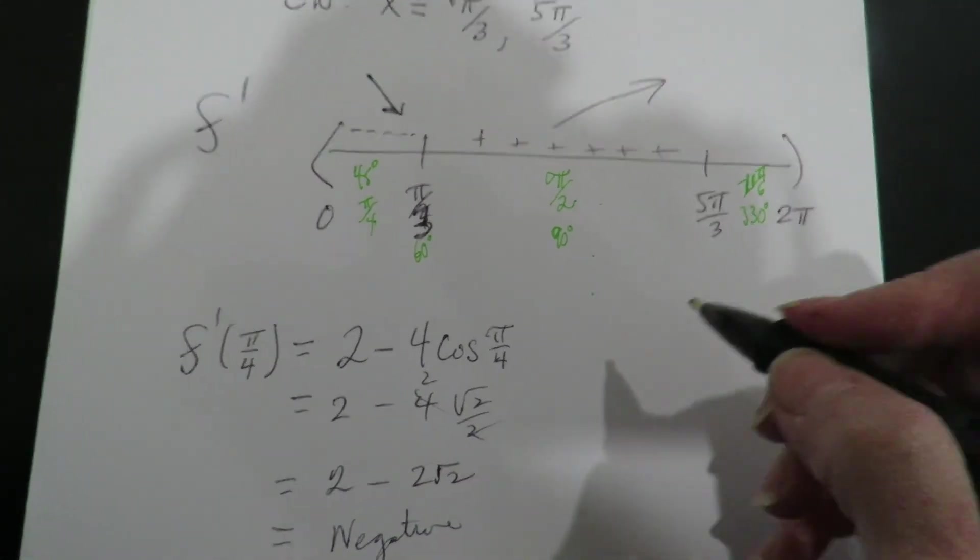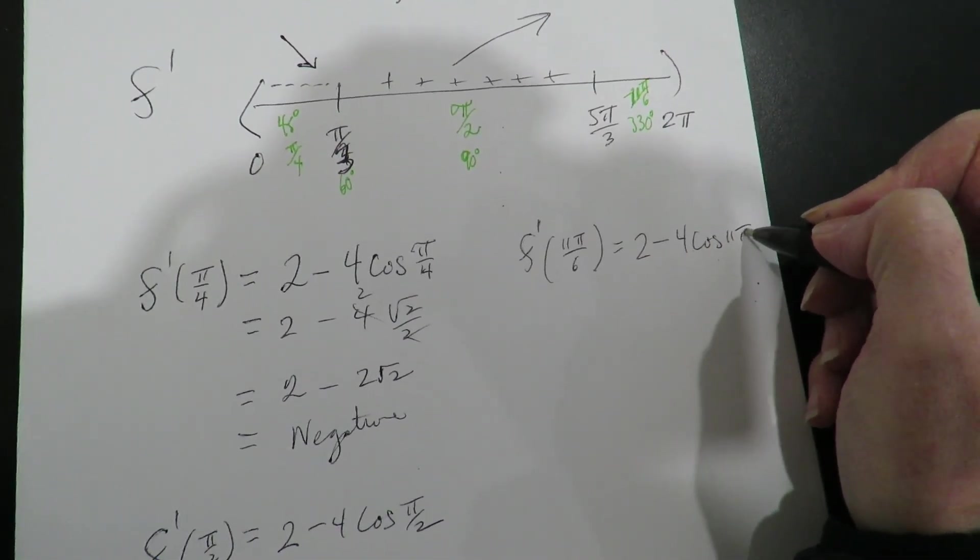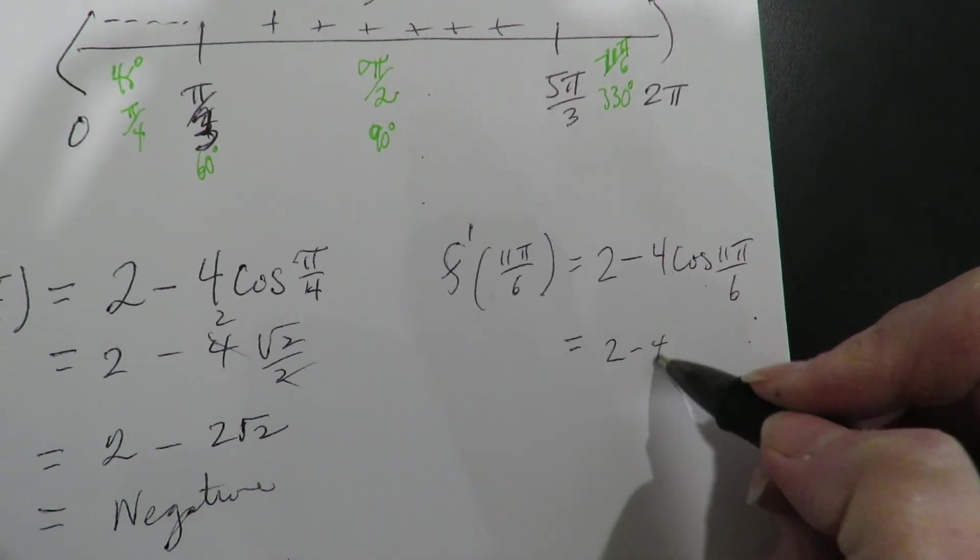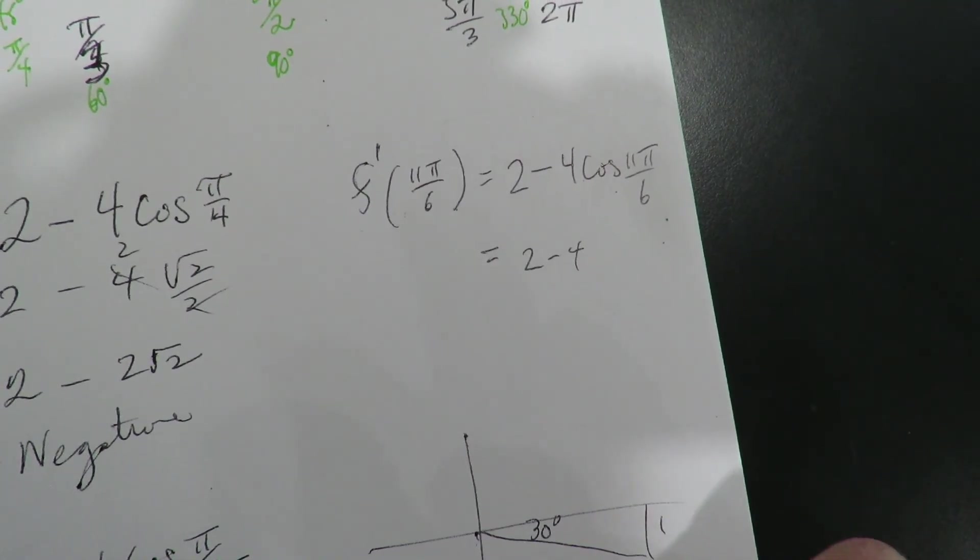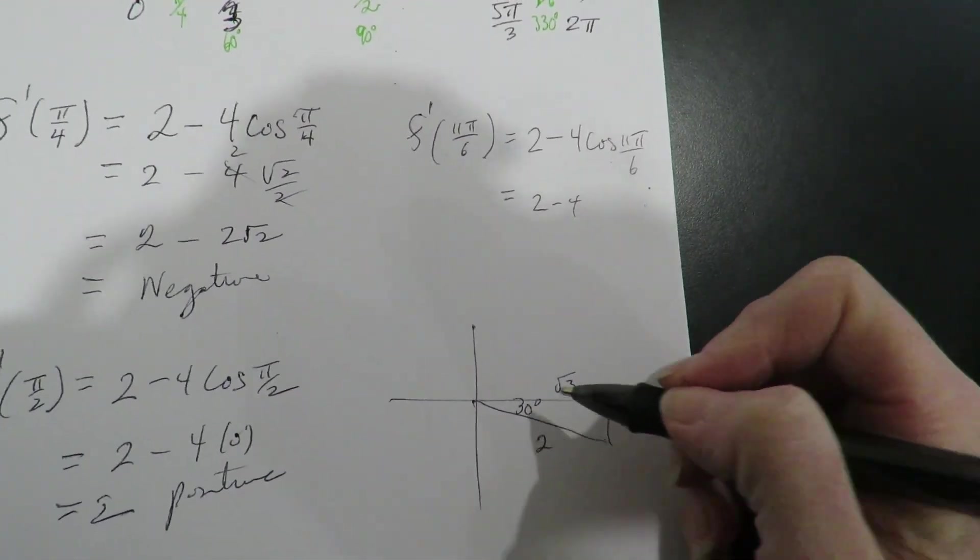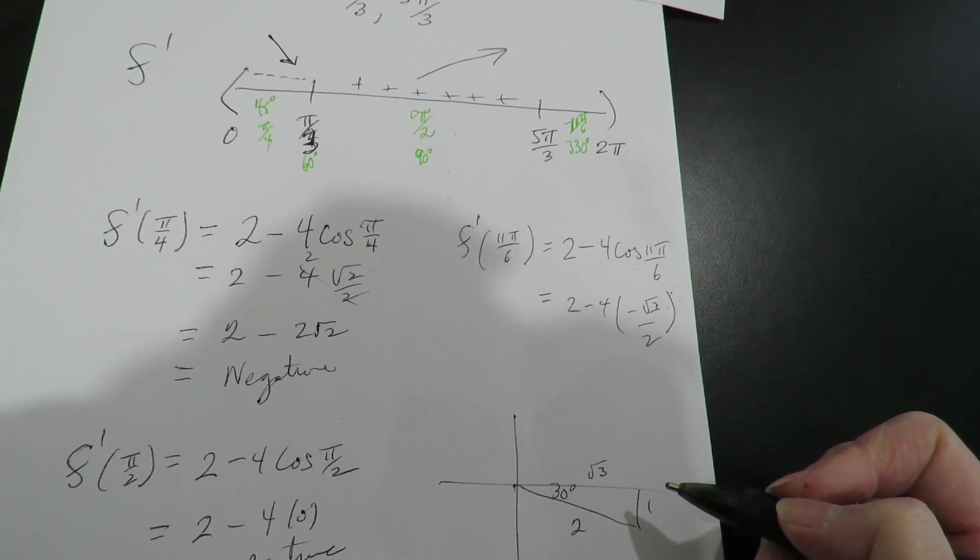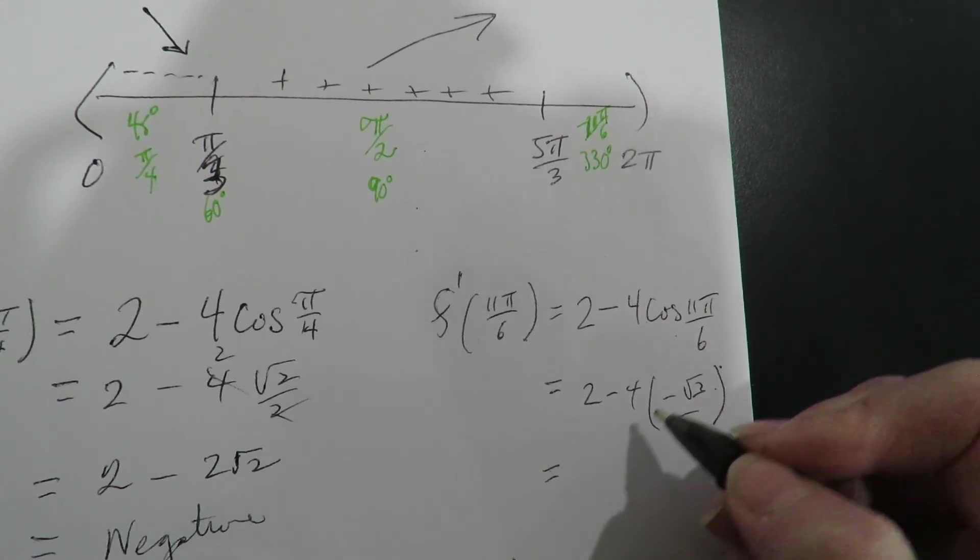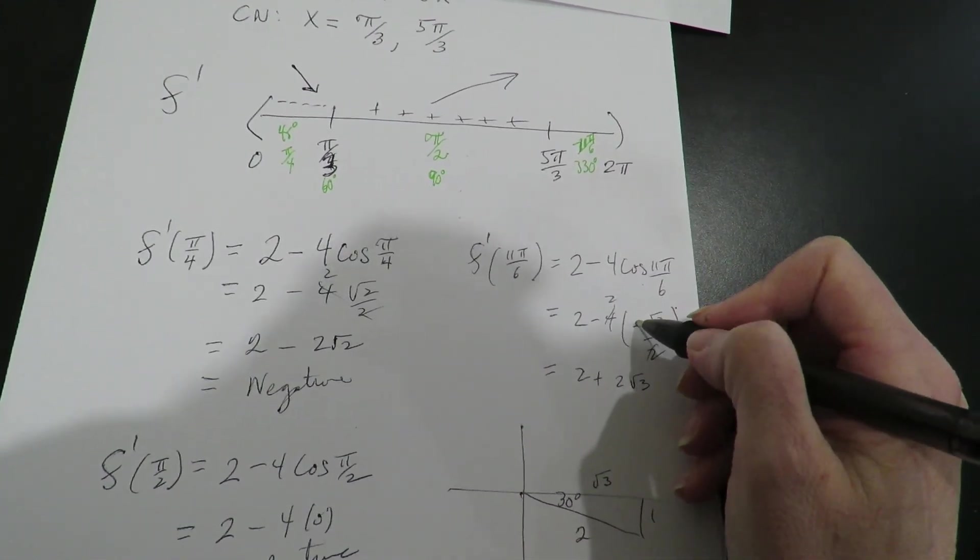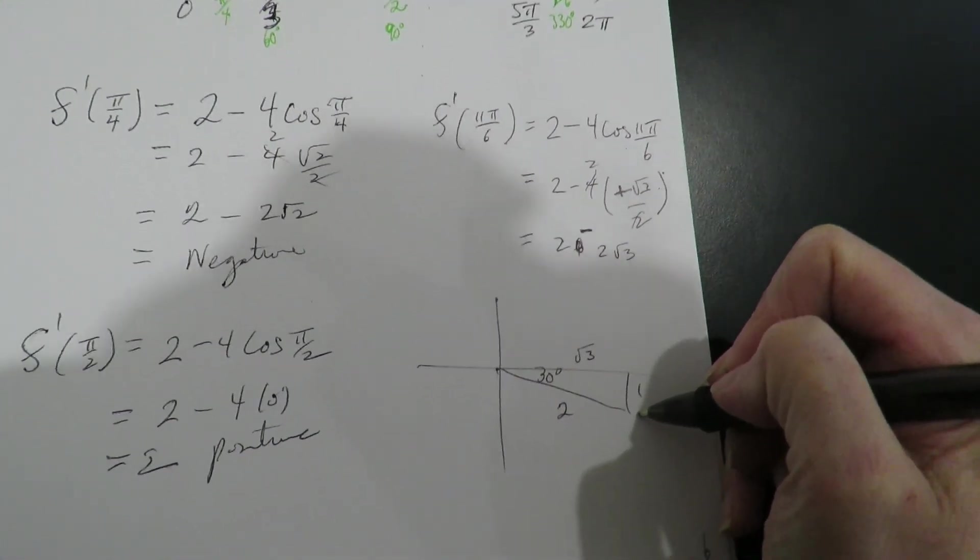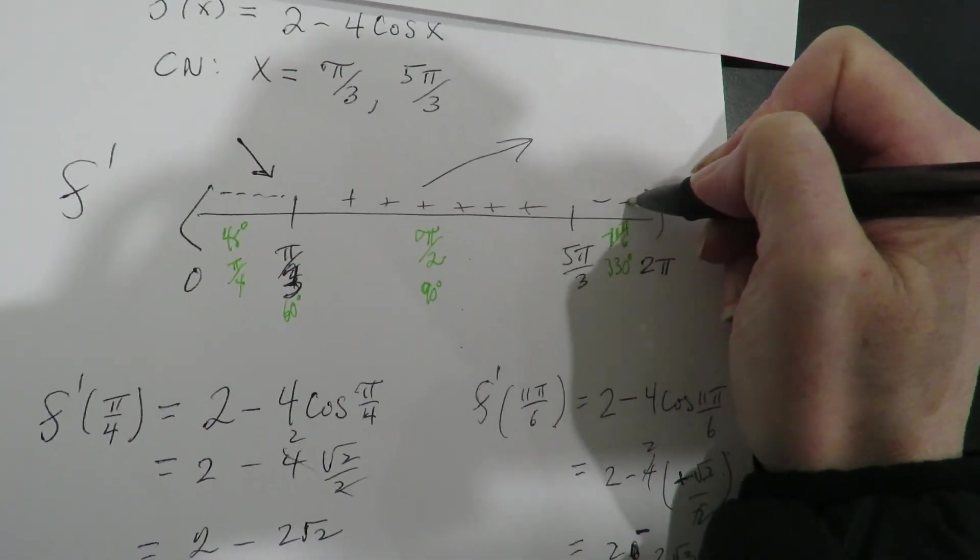Alright, now I'm going to plug in π over 2 I picked. Cosine of π over 2 is 0, so this just comes out as a 2. It doesn't really matter what the number is, you're going for positives and negatives. So this is positive. Graph is going up. Alright, I picked 11π over 6. That's 30 degrees off of here. So that's going to be 1, 2, radical 3. So the cosine of that is going to be negative radical 3, adjacent over hypotenuse over 2. So this is going to end up being 2 plus 2 radical 3. Cosine's positive in quadrant 4, so it's actually going to be negative. Which means that this is actually going to be negative. This guy comes down.